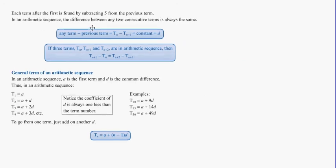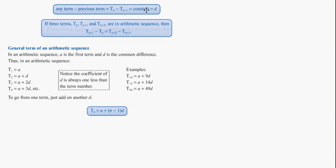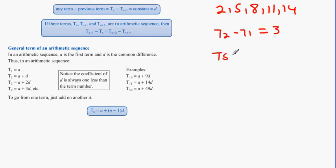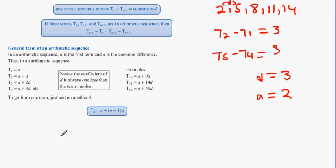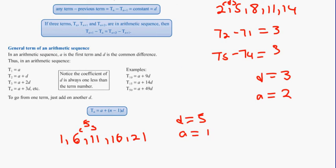Any term minus the previous term gives you the common difference. For example, T2 minus T1 is 3, and T5 minus T4, which is 14 minus 11, is also 3. So any term minus its previous term equals the constant D. In this case D is 3. The letter A refers to the initial number in the sequence, which is 2. Another example: 1, 6, 11, 16, 21 — here D is 5 and A is 1.